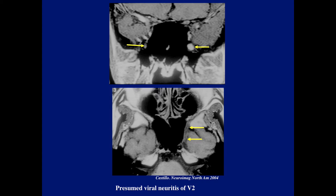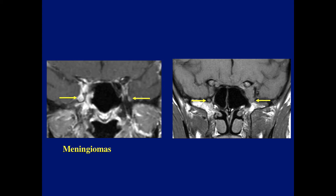Here we have a case of presumed viral neuritis of V2, causing expansion of the foramen rotundum — we can also see abnormal signal in the cavernous sinus and in the region of the foramen rotundum. Here are two separate cases of meningioma: in the first, we see meningioma in the cavernous sinus which also invaded and enlarged the foramen rotundum. In the second, meningioma within the cavernous sinus extends to the orbital apex and enlarges the foramen rotundum, compared to the normal side.